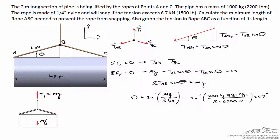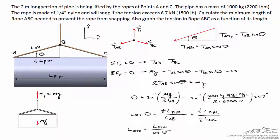Any value of theta less than 47 degrees would cause the rope to snap, and any value larger than this means the ropes can support the pipe. But we're trying to find the total length of rope ABC, not theta. With a bit of trigonometry, this length equals one half times the length of the pipe over cosine(theta). LAB is the hypotenuse of the triangle and equals one half of L_ABC. Solving for L_ABC, knowing the pipe length and theta, we get a value of 2.9 meters.